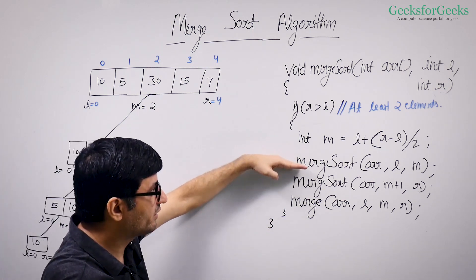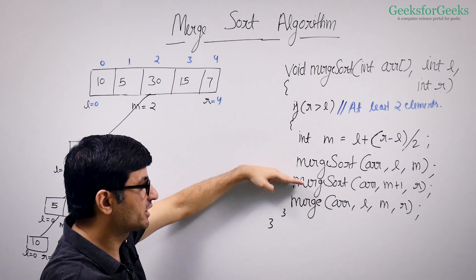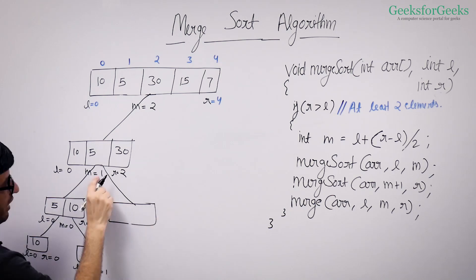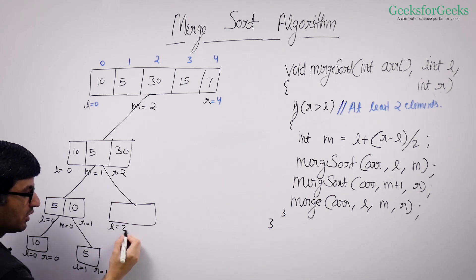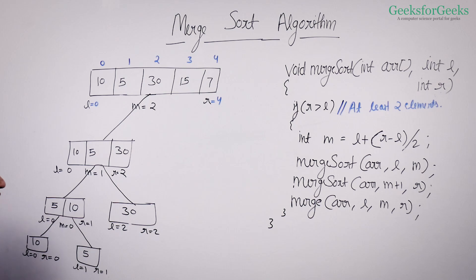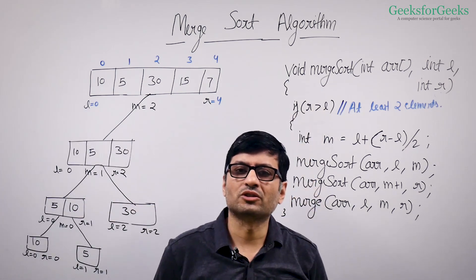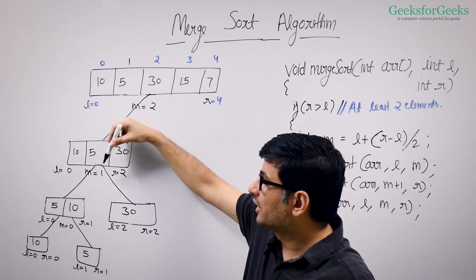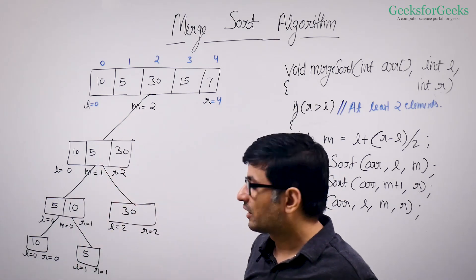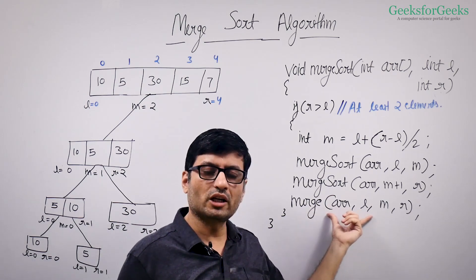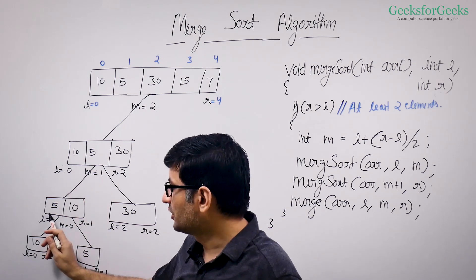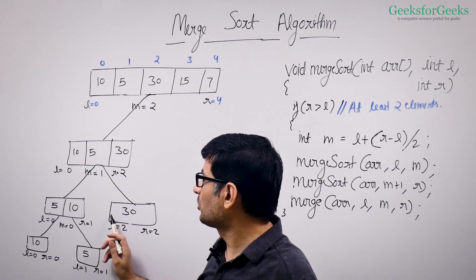Control comes back to the parent, which was waiting for the left call to be over. Now it makes a call to the right child — the other recursive call for M plus 1 to R. M is 1, so M plus 1 is 2, meaning L=2 and R=2, which is element 30. This call begins, checks the condition — R is not greater than L — so this call simply finishes and gives control back to the parent. For parent L=0, R=2, M=1, this call is over and this call is over. Now the parent will come inside the merge function.